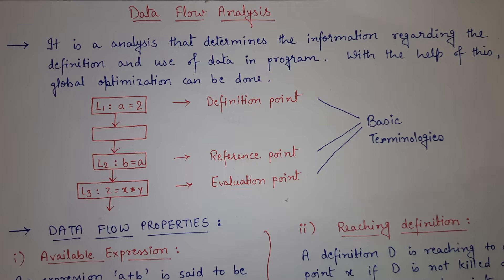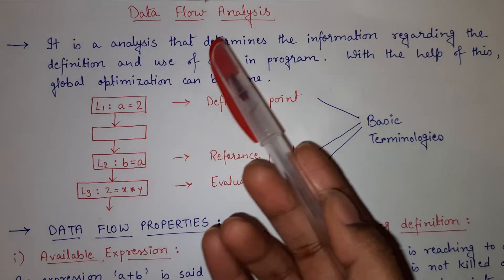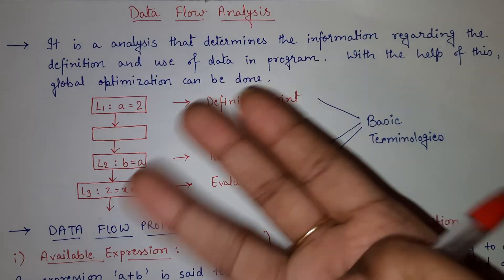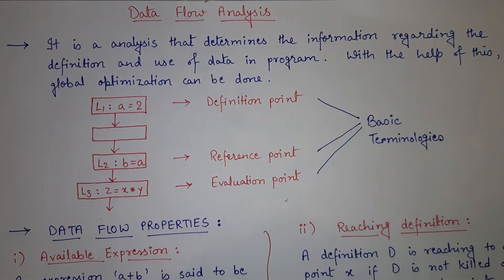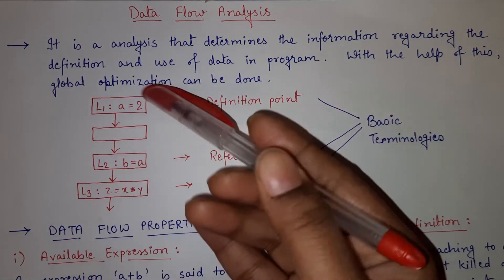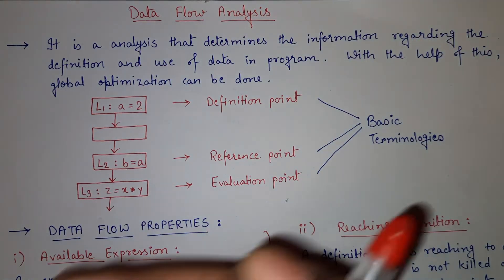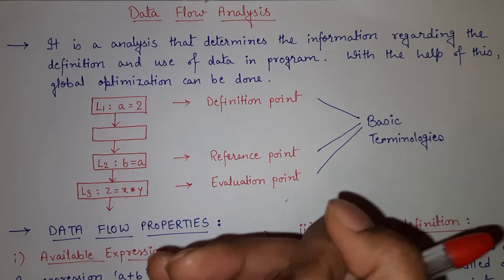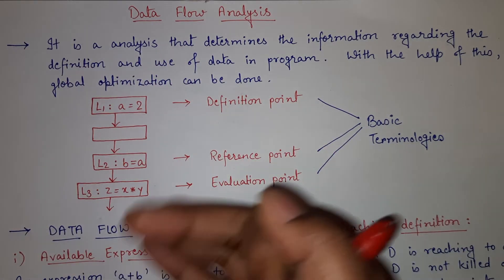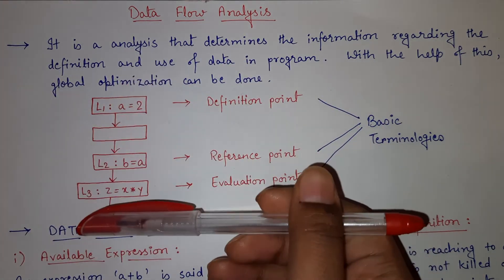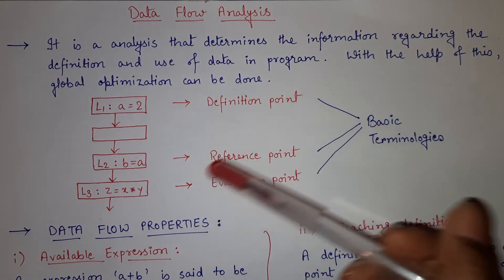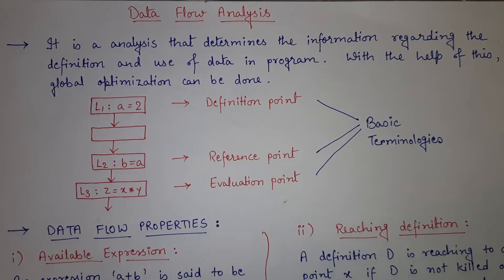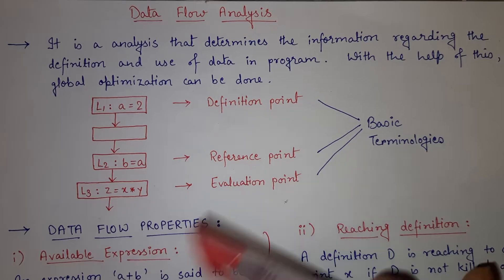Before moving forward, you must know some important terminologies related to data flow analysis. In our whole code, we are having various data — variables and values assigned to them. In data flow analysis, first we will make a flow graph. Based on the definition and usage of data, we will make one flow. When making the flow graph, there are various points we can determine: definition point, reference point, evaluation point, etc.